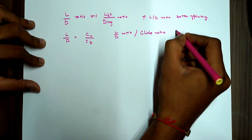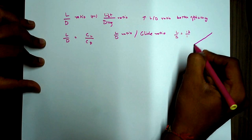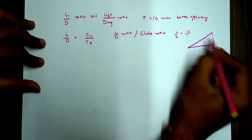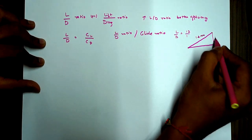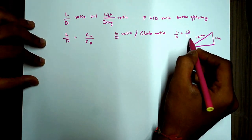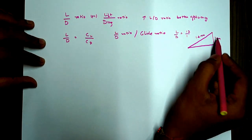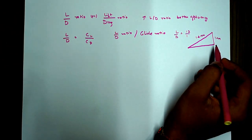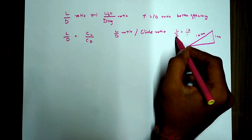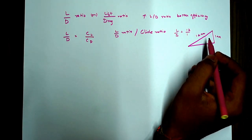So what basically it means is, if L by D is say 12 is to 1, that means suppose you are flying. If your L by D is 12 or 12 is to 1 basically, then you will glide 12 nautical miles with a loss of 1 nautical mile. Alright, so higher the L by D, better the efficiency of the aircraft.